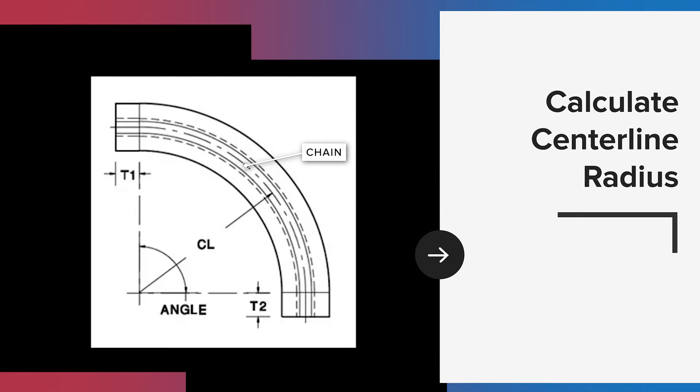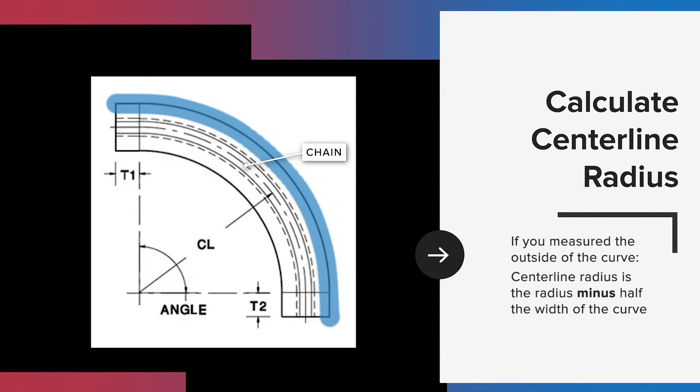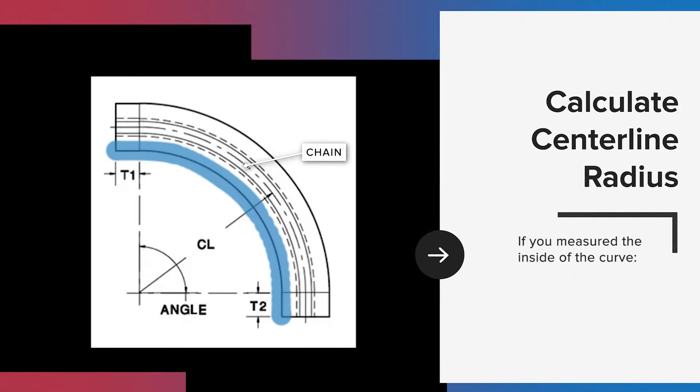While we now have the radius of our curve, curves for chain are specified by the centerline radius. The centerline is the midpoint of the chain, so the centerline radius is the radius plus or minus half the width of the curve. If you measured the outside of the curve, the centerline radius is the radius you calculated minus half the width. Conversely, if you measured the inside, the centerline radius is the radius plus half the width.